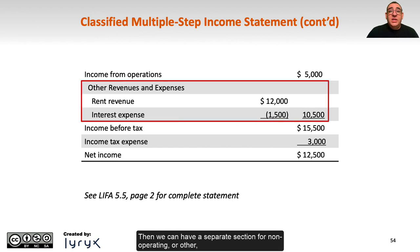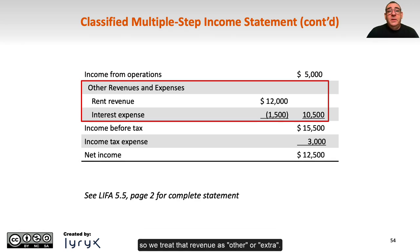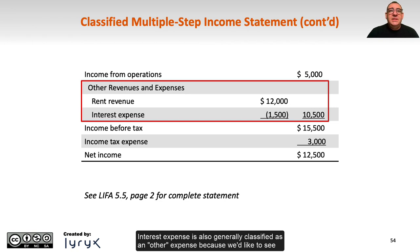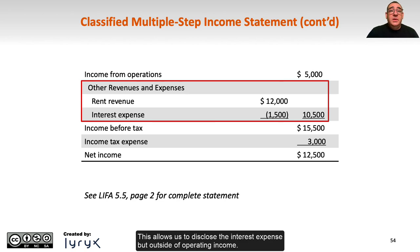Then we have a separate section for non-operating or other revenues and expenses, such as rent revenue or interest expense. These are classified as other because XYZ isn't primarily in the rental market. Interest expense is also classified as other because we want to see what operating income would look like without needing to borrow money, allowing us to see if the business can generate profit without any help.